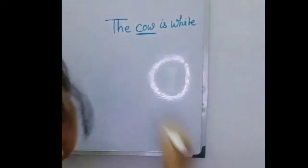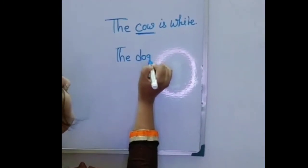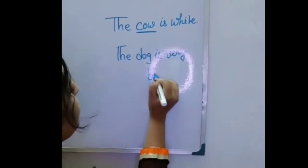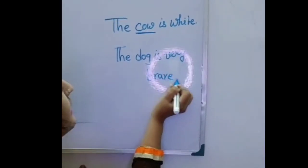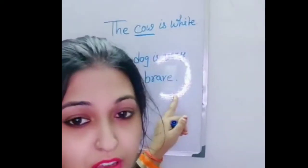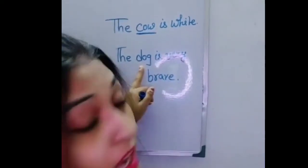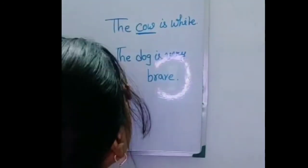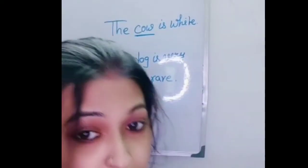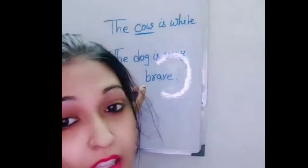Similarly, we can say 'The dog is very brave.' In this sentence, we are specifically saying that this particular dog is very brave. So here we use article 'the' to indicate this dog individually. So the dog is specifically mentioned with the help of article 'the'.